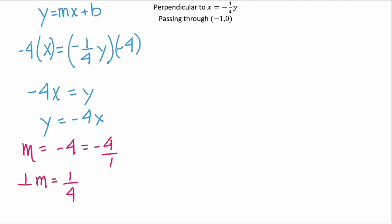That means our new line will be y equals one-fourth x plus some b. We need to find the value of b, and that's where that given point comes in. We substitute in the x and the y value that we're given.